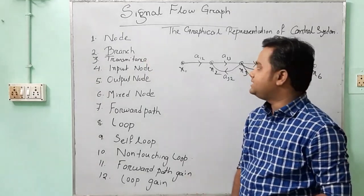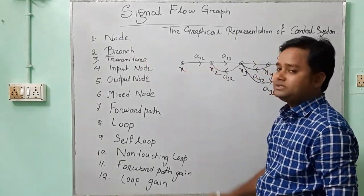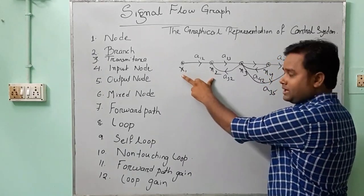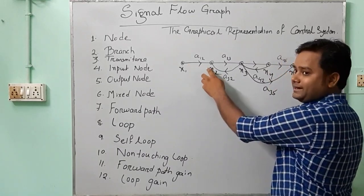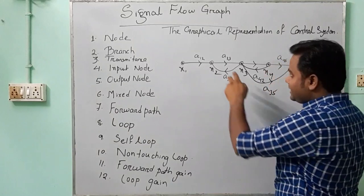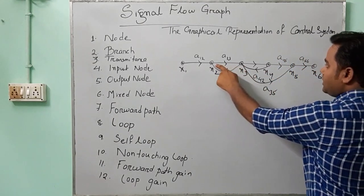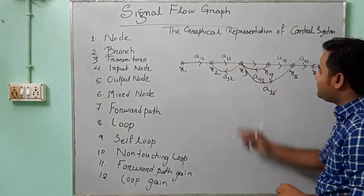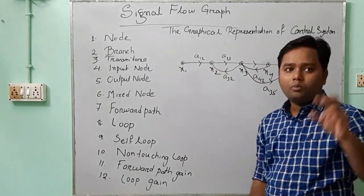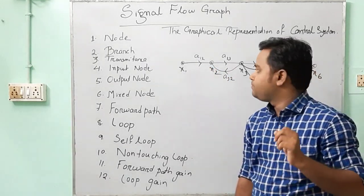Next, branch. What is a branch? A branch is the connection between two points. That means X1 and X2 are two nodes, and by connecting two nodes, a line is drawn — this line is known as a branch. Similarly, from X2 to X3, one line is connected, that is also a branch. From X3 to X2, another line is connected, which is also a branch. So the line connecting one node to another node is known as a branch.